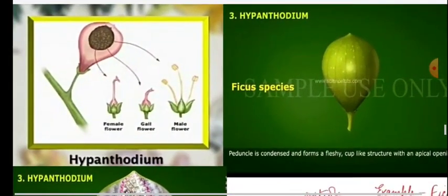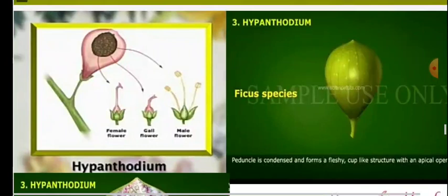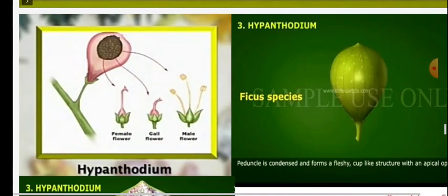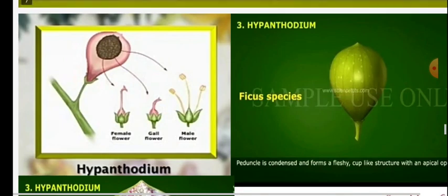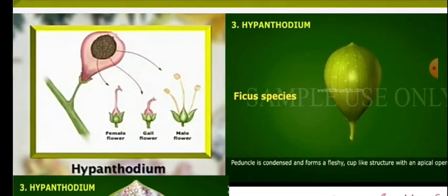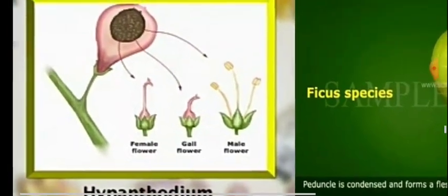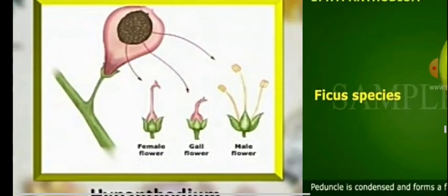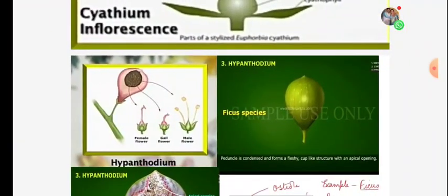The third type is Hypanthodium inflorescence. Good examples are fig, banyan tree, peepal, and anjir. Inside, there are two types of flowers: male flower and female flower. The sterile flowers are called gall flowers. Remember these names — gall flowers, male flowers, and female flowers are all present inside.